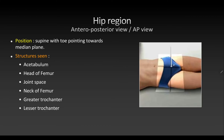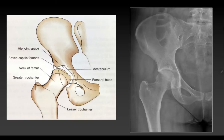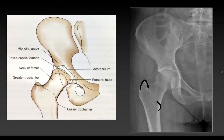First we will see the hip region, anteroposterior view. For this image we need to keep the patient in supine position with the toe pointing towards the median plane. This is to ensure that the neck of femur does not appear short. The structures seen in this x-ray are the acetabulum and the head of femur together forming the hip joint, the joint space between them, neck of femur, greater trochanter, and lesser trochanter. In this image, the white line is the margin of the acetabulum, this is the head of femur, and the translucent area between the two is the joint space. This is the neck of femur, this is the greater trochanter, and this small projection is the lesser trochanter.